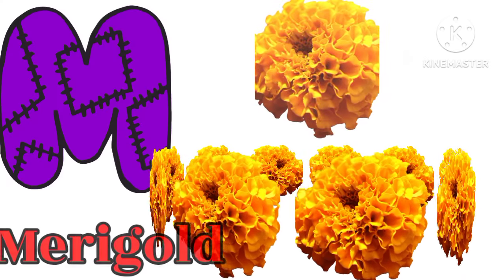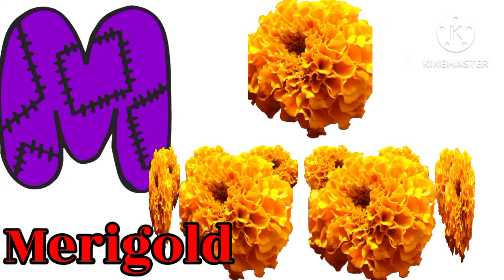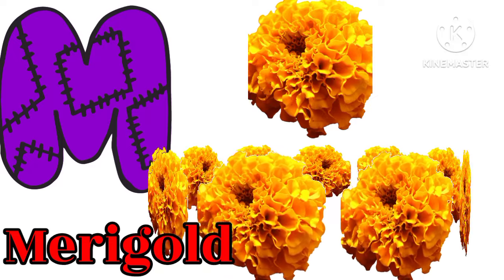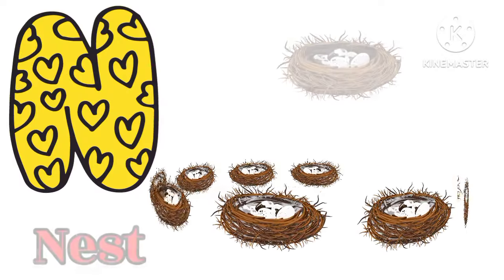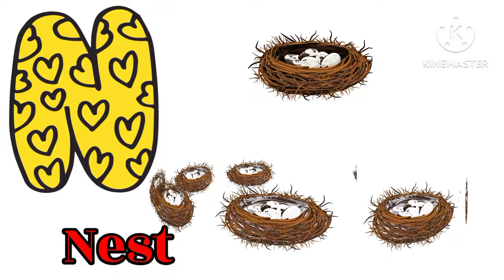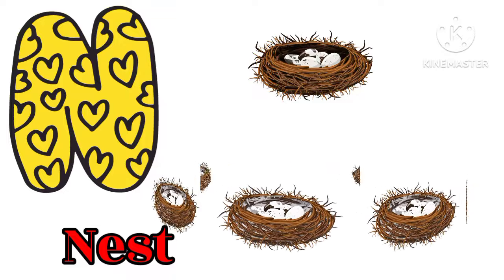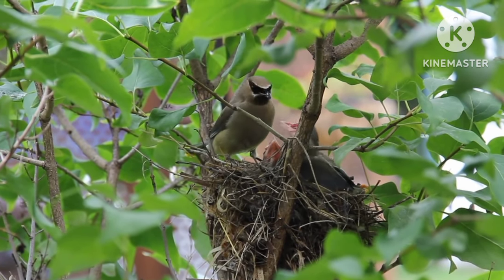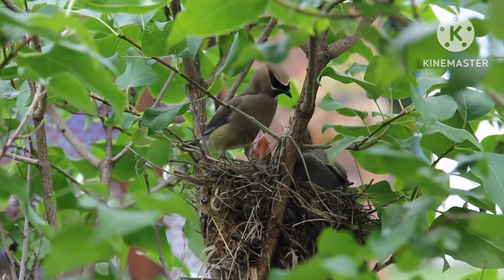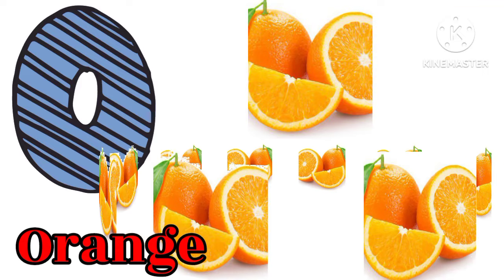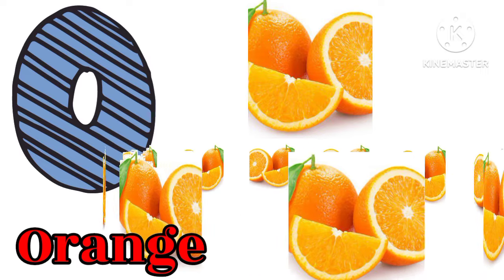M for Marigold — Marigold means Gainda. N for Nest — Nest means Ghosle. O for Orange — Orange means Chantra.